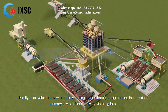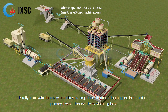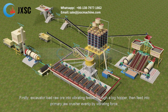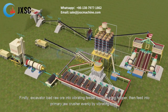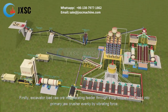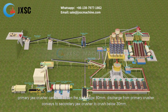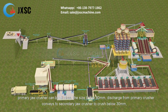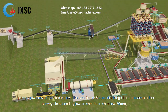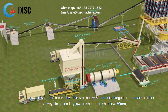Firstly, the excavator loads raw ore into a vibrating feeder through a big hopper, then feeds it into the primary jaw crusher evenly by vibrating force. The primary jaw crusher can break down the ore to a size below 80 millimeters.